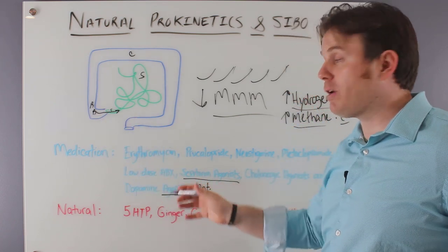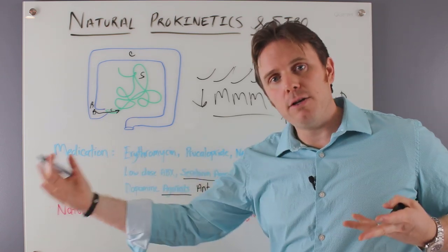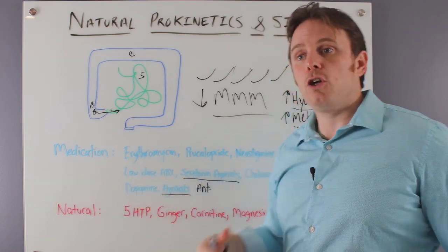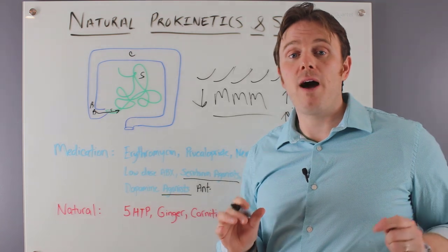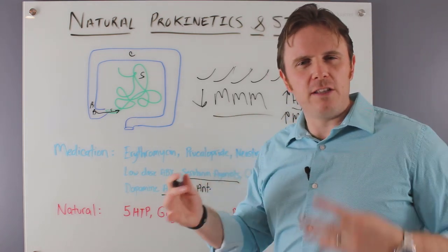Typically, we'll use more of the prokinetics when things are going too slow to stimulate it. And we'll do more of the binders to slow it down if it's going too fast. We'll even use some probiotics too if that's an issue. So I hope this gives you kind of an overview of things that you can do.